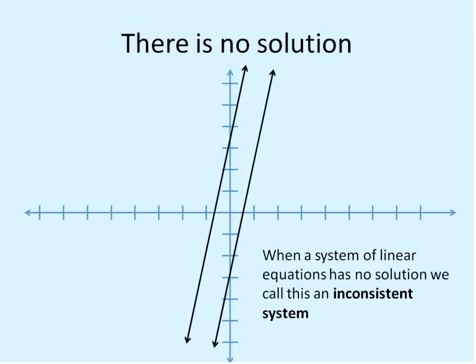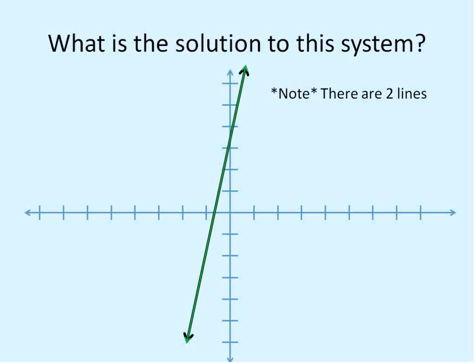There's one other type of system that we can deal with. There's the consistent independent, the inconsistent system. And now, what if you've got two lines right on top of each other like this? There are two lines. I tried to make them different colors so they stand out. There's a black line and a green line. They are exactly the same line. What would we say for this?